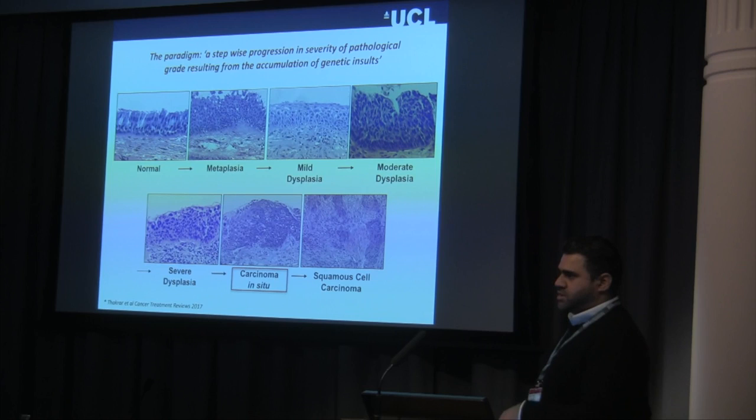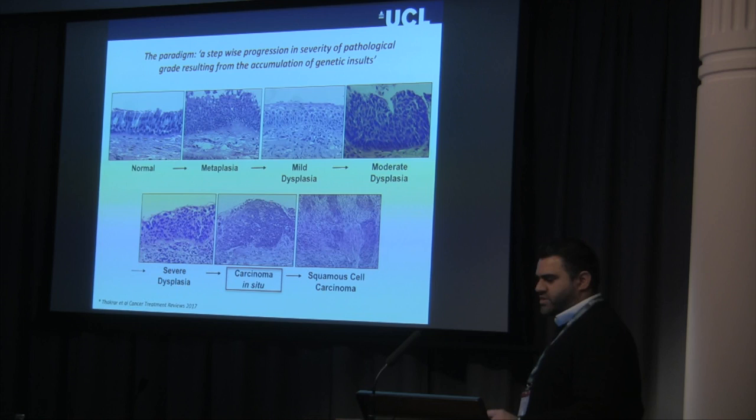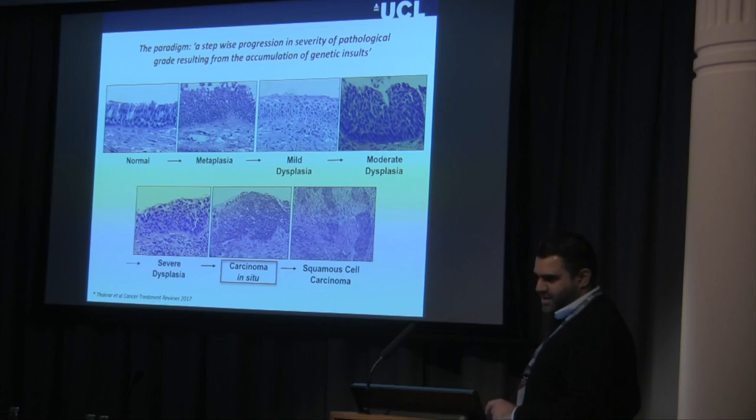Carcinoma in situ consists of abnormal cells still confined within the basement membrane — it is not yet a cancer. Microinvasive cancers are defined by breach of the basement membrane.